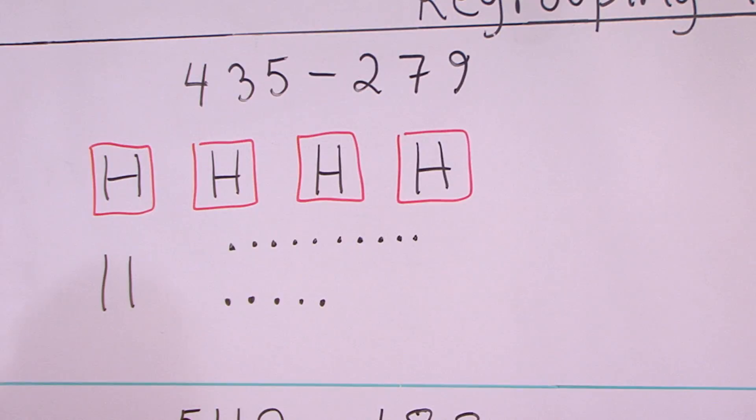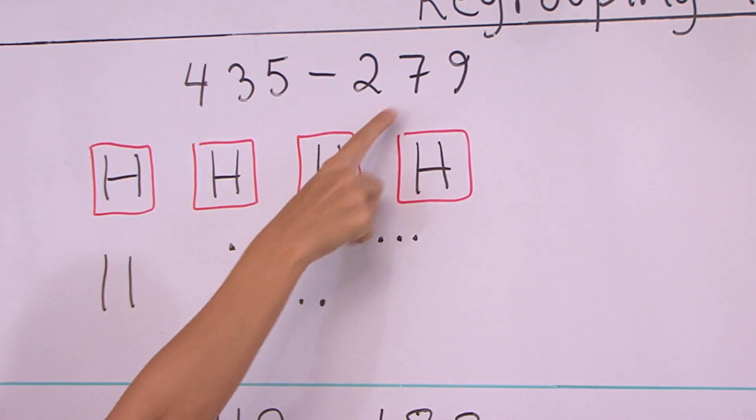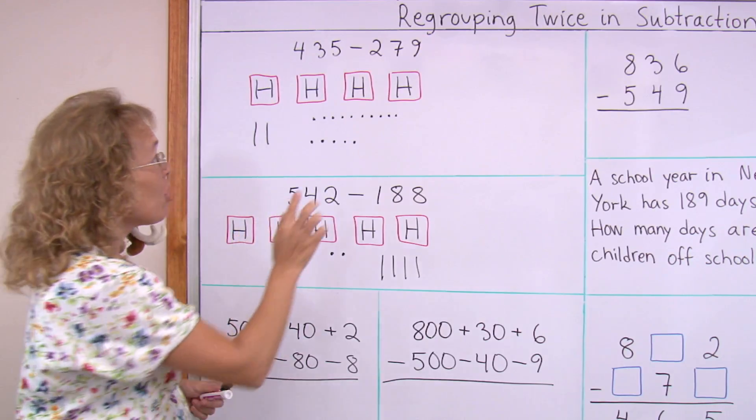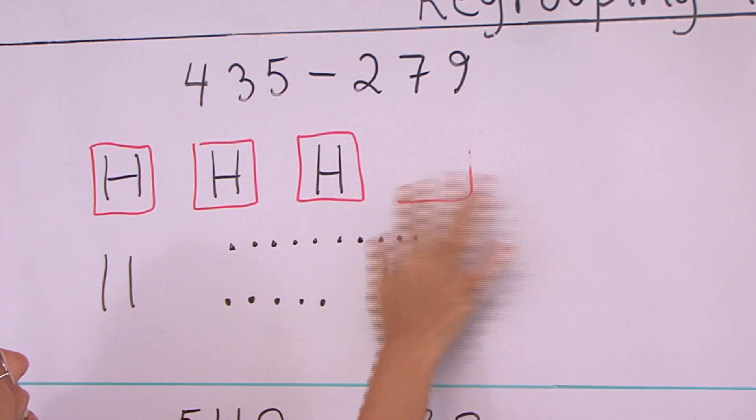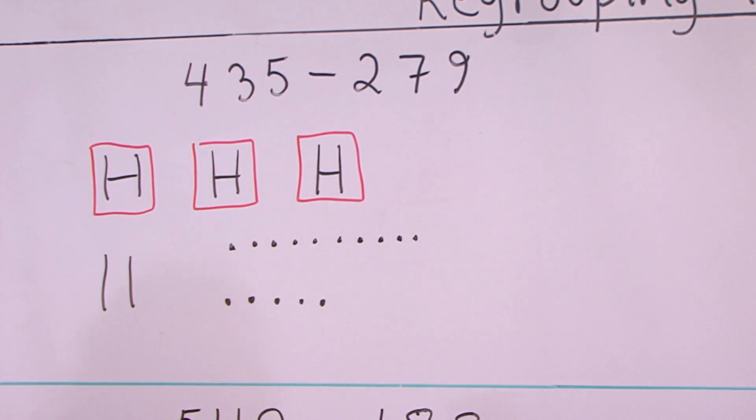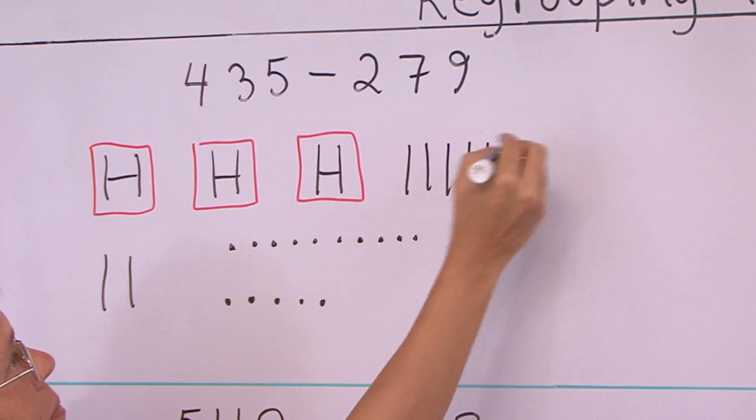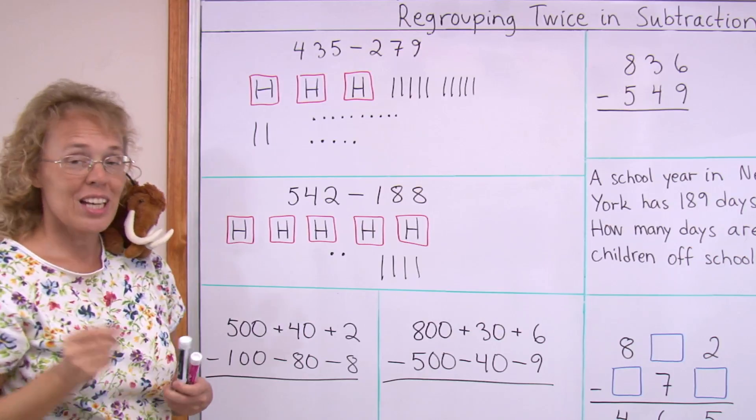But I still could not subtract seven tens, those seven tens. So I need to also take 100 and break that into ten tens. Now I can subtract everything.